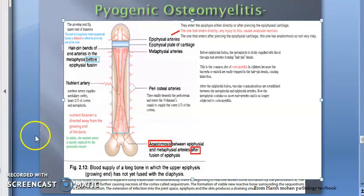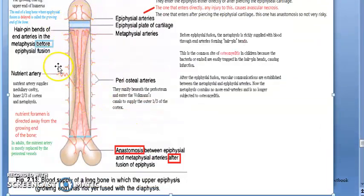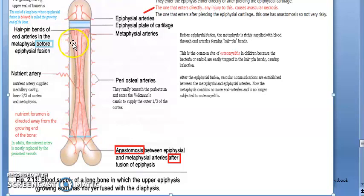The tension in the marrow cavity is increased due to pus. Because of this increased tension, the infection starts spreading along the marrow cavity into the endosteum, and then into the haversian and Volkmann canals, causing periosteitis. The pus started filling the marrow cavity and reached the endosteum. Remember: periosteum, then compact bone, then endosteum, then bone marrow — the medullary cavity.